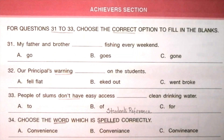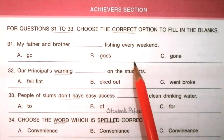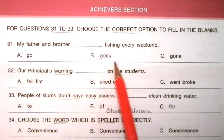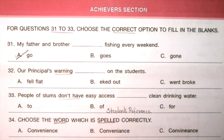Next topic is the Achiever Section. For questions 31 to 33, choose the correct option to fill in the blanks. Question 31: My father and brother ___ fishing every weekend. Options: go, goes, gone. The answer is A: go. My father and brother go fishing every weekend.